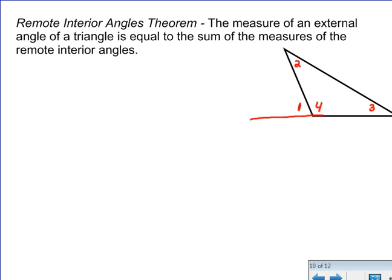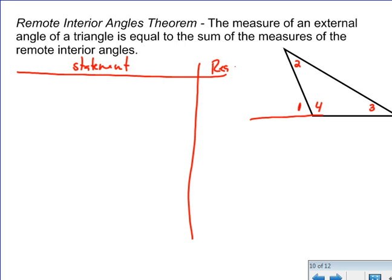Now, interestingly, in this particular problem, we don't really have any given statement, so we don't need to even start with a given statement. Our given is kind of the picture and the names of these angles, but we really don't know anything about them. So we're going to start by just saying some things we know about this picture.